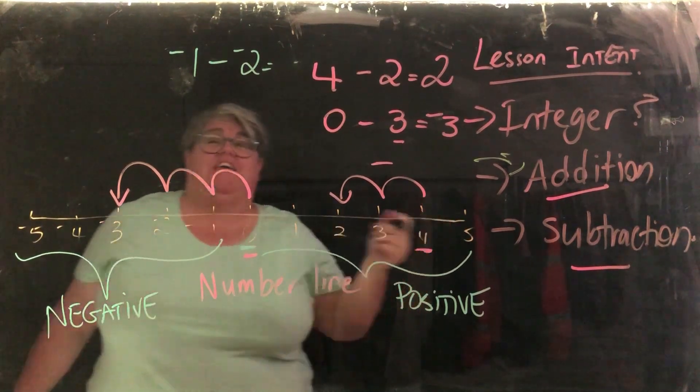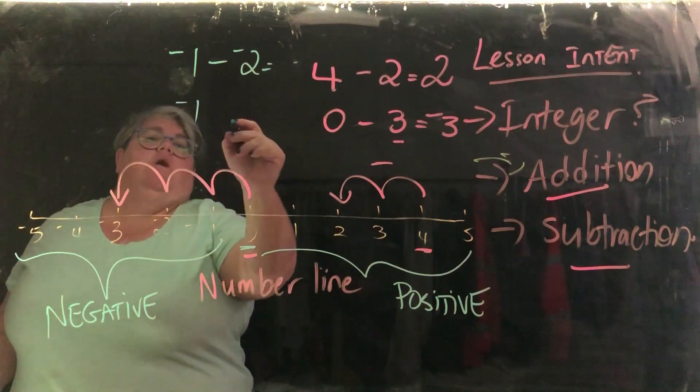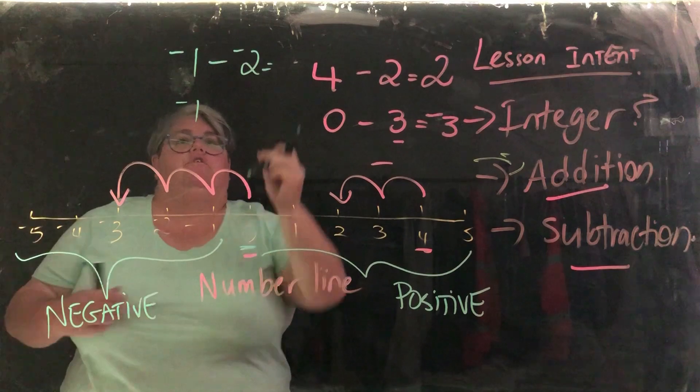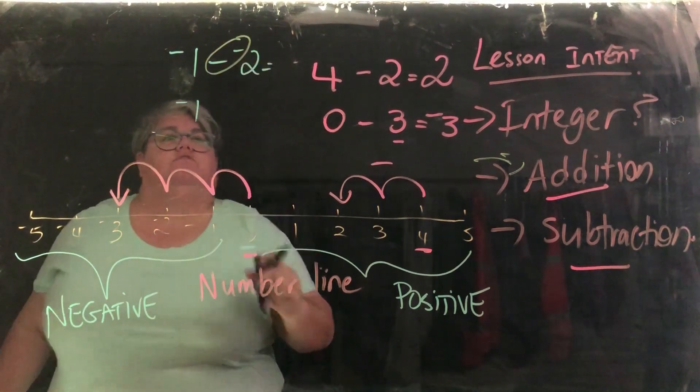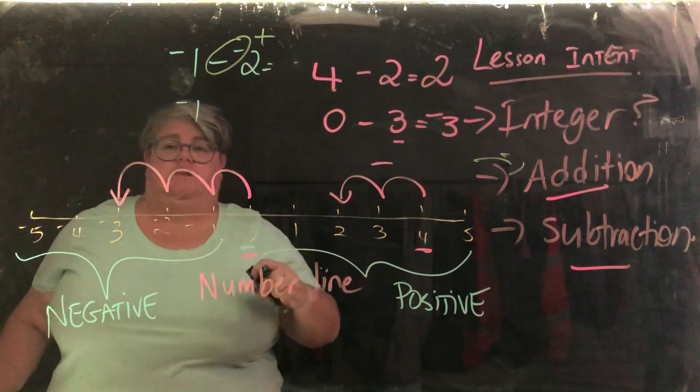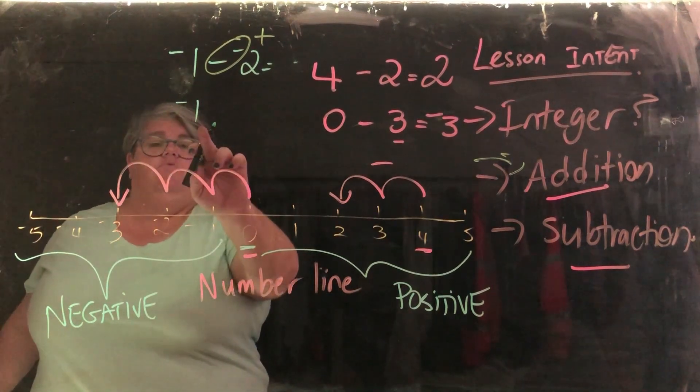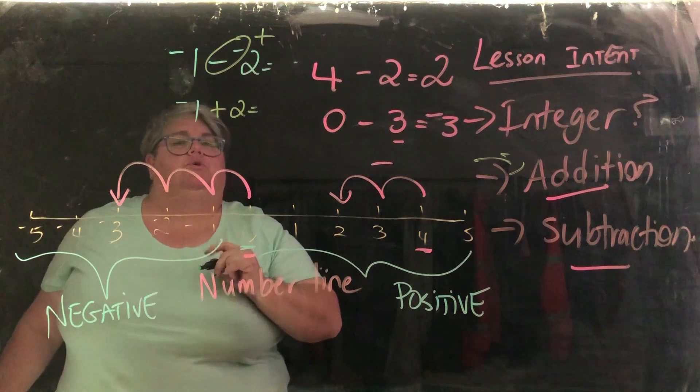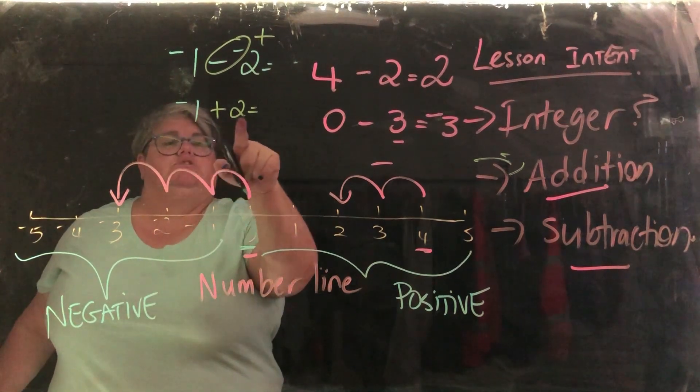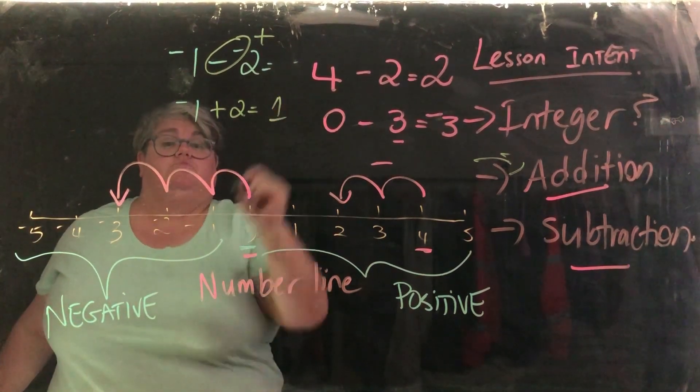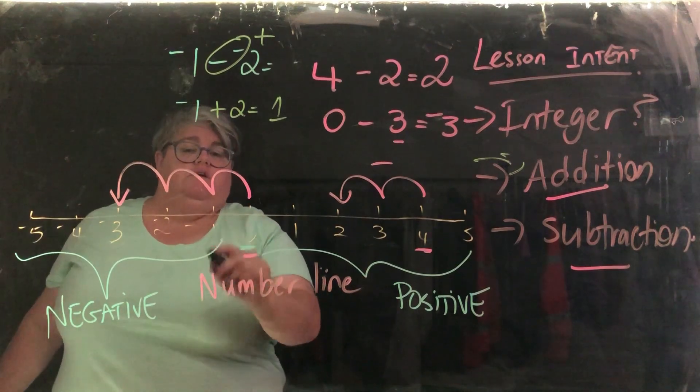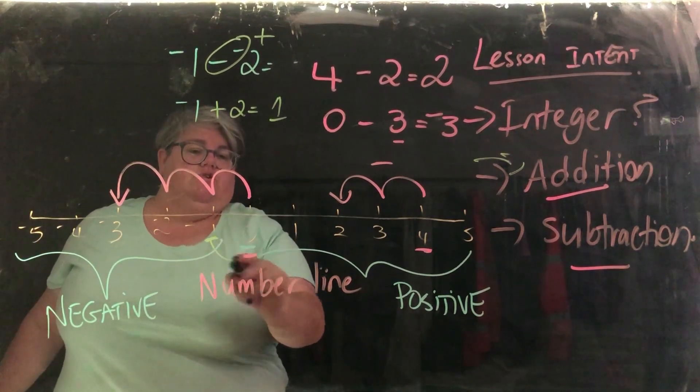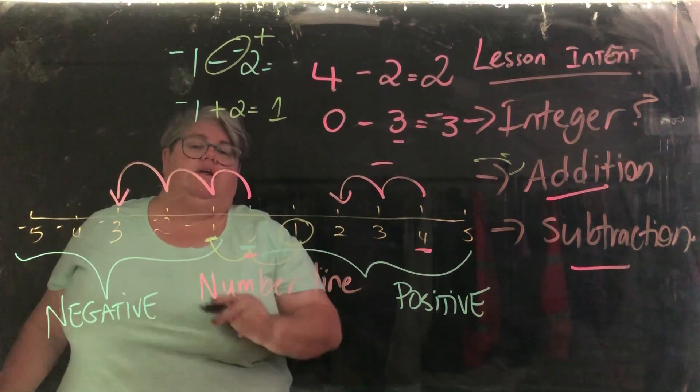So in actual fact, what we're saying here is negative 1. Because remember we have, again, another pen for you. These two negatives here are actually making a positive. Therefore, what we're actually saying is negative 1 plus 2. So negative 1 plus 2 is 1. And let's see. So here we are here, negative 1. We're plussing 2, so 1, 2. And we get 1 there.